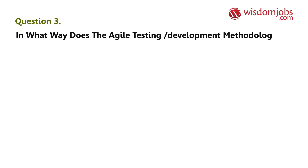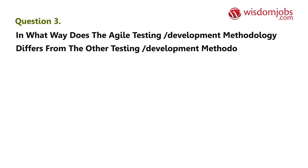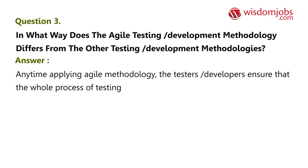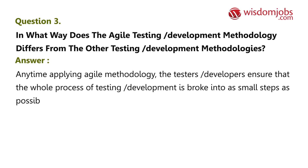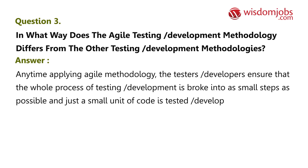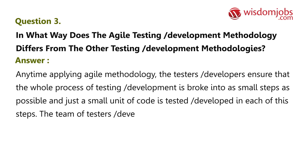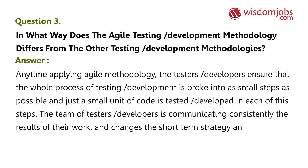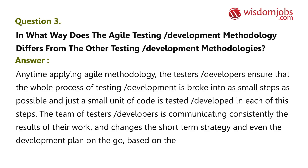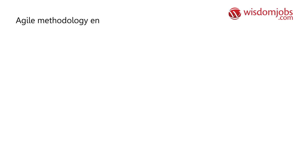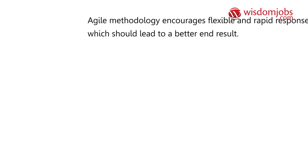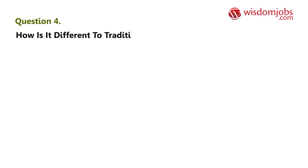Question 3: In what way does the agile testing development methodology differ from other testing development methodologies? Answer: When applying agile methodology, testers and developers ensure the whole process of testing and development is broken into as small steps as possible, and just a small unit of code is tested and developed in each step. The team communicates consistently on results, short-term strategy, and development plans on the go. Agile methodology encourages flexible and rapid response to change, which should lead to a better end result.